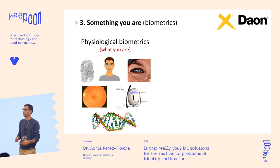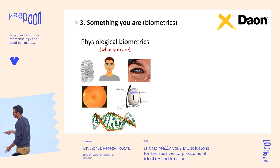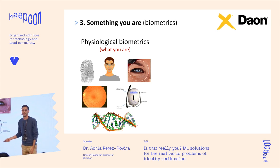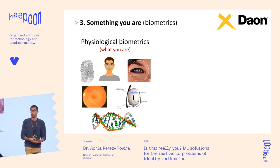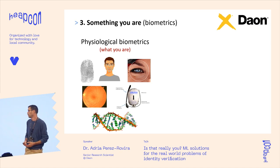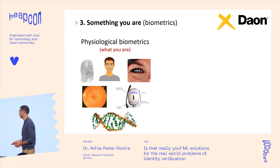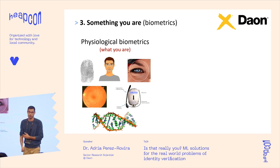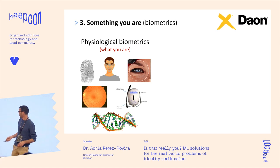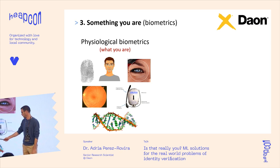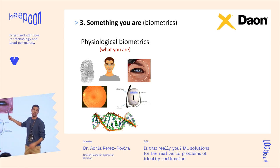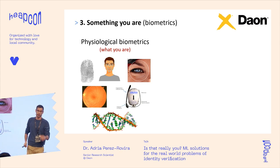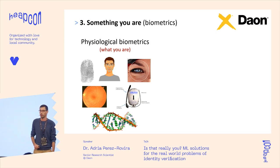If a biometric changes constantly, you'll need to re-enroll, which is a pain. The mother of all biometrics is DNA — the final proof it's you, unless you have a twin. For example, with Osama bin Laden, they took DNA samples and iris scans to be sure it was him.